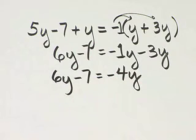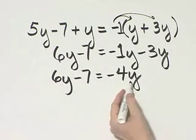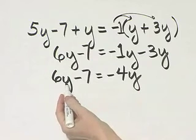No fractions, no parentheses, nothing that can be simplified on either side of the equation. Notice I have a variable term here, number, variable term.